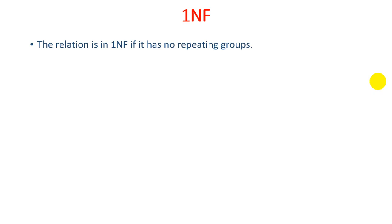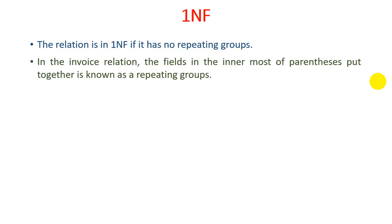Now we start with the first normal form. A relation is in first NF if it has no repeating groups. Whenever we discuss the first normal form there are two different conditions: first, the table or relation must be in unnormal form, and second, we need to remove repeating groups. So for first NF we must have an unnormal form relation, and from that we remove the repeating groups.